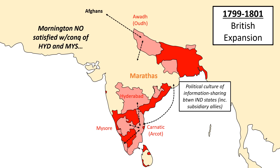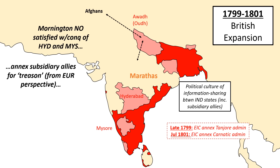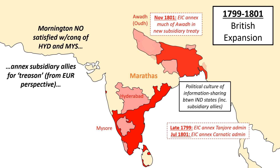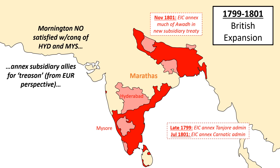Denouncing the contacts of these subsidiary allies as treason, Mornington demanded, as punishment, that their rulers transfer control over their entire administration to the EIC. With no real means of resistance, the rulers folded, and much of what was once only indirectly held in southern India now fell under direct British rule. A similar accusation also led to the annexation of much of the Middle Ganges in northern India, with the offending contact this time being with the Afghans. In the process, the British sent out a clear signal — from here on out, subsidiary allies were to behave according to European standards of political behavior.